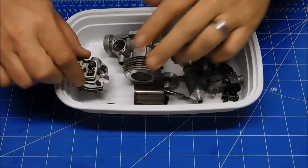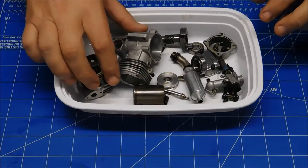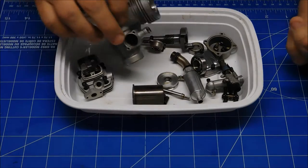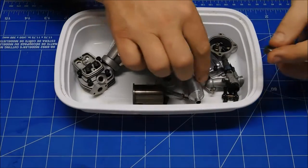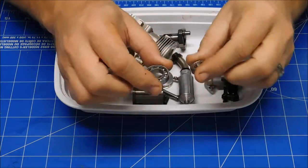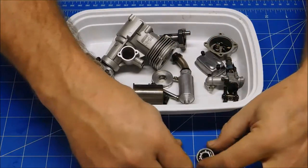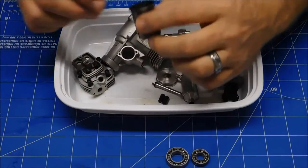I have all of the clean parts here for my OS FS 40 Surpass, all ready to be reassembled. I just got the bearings in the mail today. Fresh bearings here, so on the front bearing I took one of the shields off already. The bearings are ready to go.